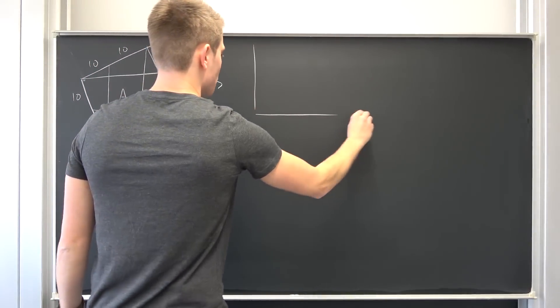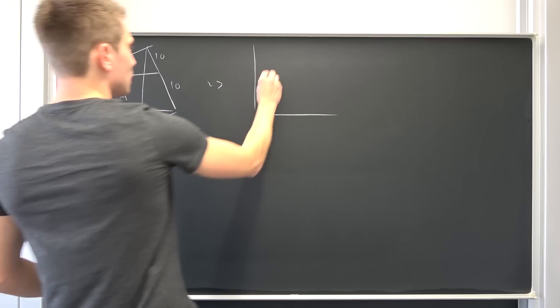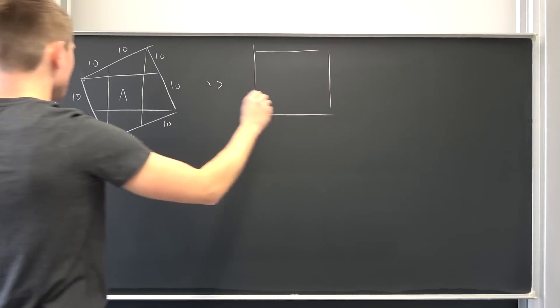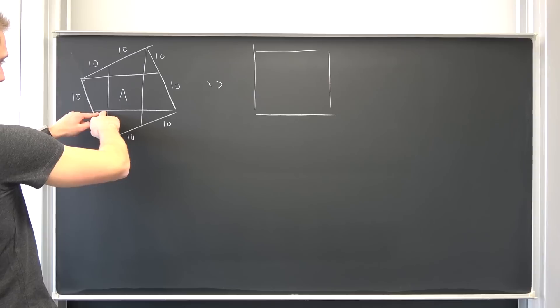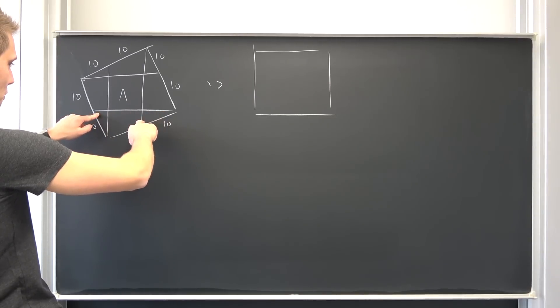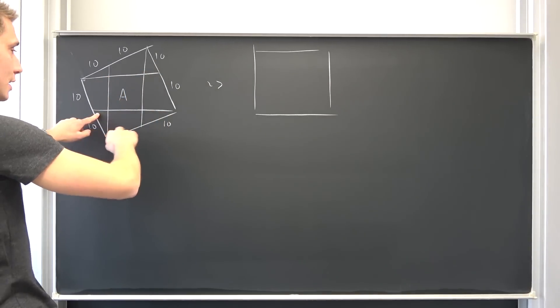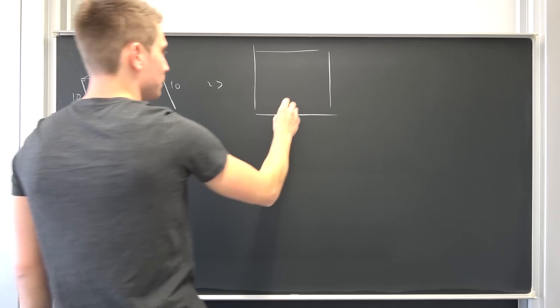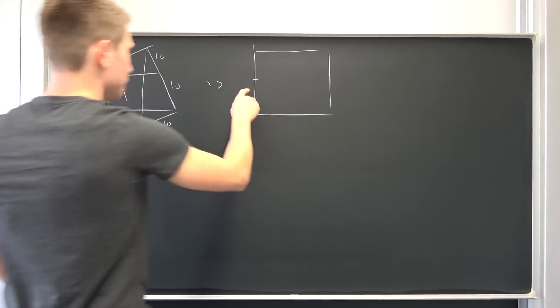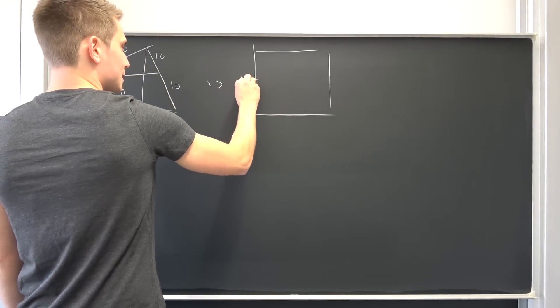Now if we put it into a coordinate system, we are going to have our square and we also have, what do we actually need? We only need this function, this function, and this function, and then the intersection point. Meaning what we are interested in is this point right here. This is exactly at 10.